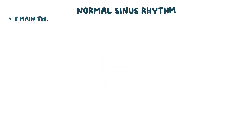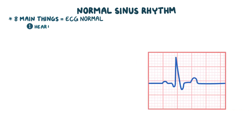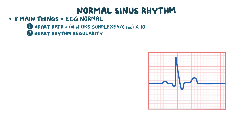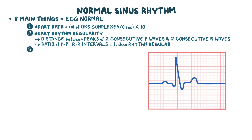There are eight main things to look for on an ECG to ensure everything is normal. First, the heart rate can be calculated by counting the number of QRS complexes in six seconds and multiplying by 10. Secondly, heart rhythm regularity can be assessed by checking the distance between peaks of two consecutive P waves and two consecutive R waves — if the ratio of the PP and RR intervals is one, the rhythm is regular. Thirdly, the P wave should be present, regular in timing and shape, and there should be one for each QRS complex.